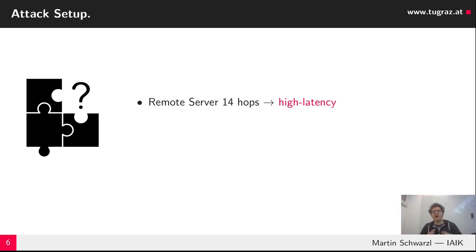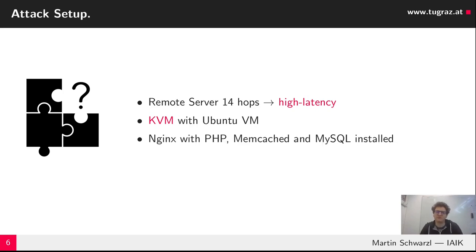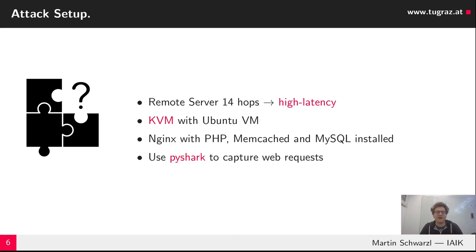In our paper we present a remote memory deduplication attack on a server that was 14 hops away with very high latency. We used KVM to virtualize an Ubuntu virtual machine, with NGINX, PHP, Memcached, and MySQL installed. To capture network and web requests we used PyShark.